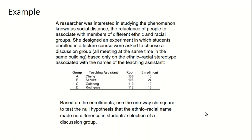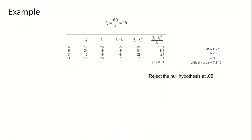These are our frequencies: 10 enrolled in Chang, 24 in Schulz, 10 enrolled in Goldberg, and 16 in Rodriguez. Since we have four groups and 60 students, our expected frequency is going to be 60 divided by 4, or 15.